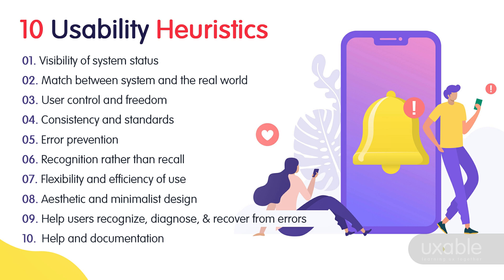Let's see what the 10 usability heuristics are — these are broad rules of thumb. The first one is visibility of system status, then match between system and the real world, user control and freedom, consistency and standards, error prevention, recognition rather than recall, flexibility and efficiency of use, aesthetic and minimalist design, help users recognize diagnose and recover from errors, and help and documentation.